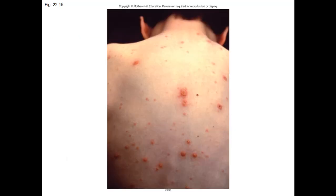Moving to viral skin diseases: an exanthem is a skin rash. Many rashes occur as viruses that infected the respiratory system travel in the blood to the skin. The first one is chickenpox, varicella. Symptoms include itchy bumps and blisters — small red spots are macules, little bumps are papules, small blisters are vesicles — and fever will start up.